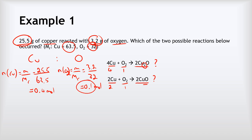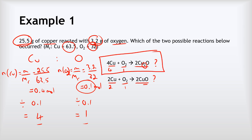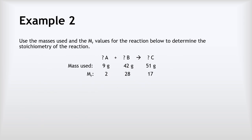To simplify the ratio, we divide each part by the smallest value. So 0.1 divided by 0.1 gives one part of O₂, and 0.4 divided by 0.1 gives four parts of copper. We've got four coppers to one oxygen, therefore the first equation is correct because it has that four to one ratio.